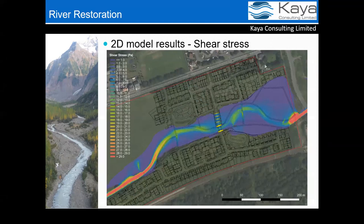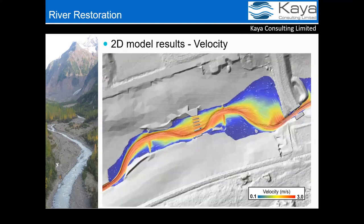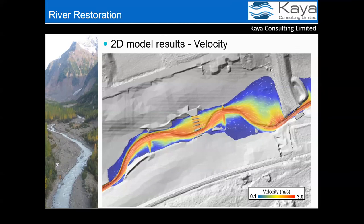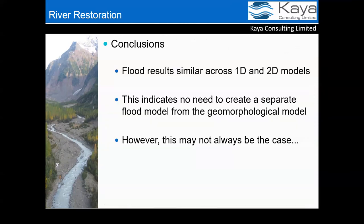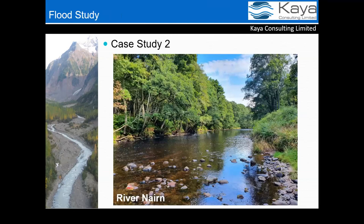We could then look at other model outputs such as shear stress and velocities, which highlight how the restoration project would be advantageous. You can see much higher stresses in the straight channel and lower stresses around the meander bends. These velocity outputs help visualize flooding mechanisms and provide a visually engaging figure for clients — something not available from a 1D model, which wouldn't have these varying in-channel velocities. The conclusion was that flood results were similar across both 1D and 2D models, indicating for this project a separate flood model from the geomorphological model wasn't required — though this may not always be the case.